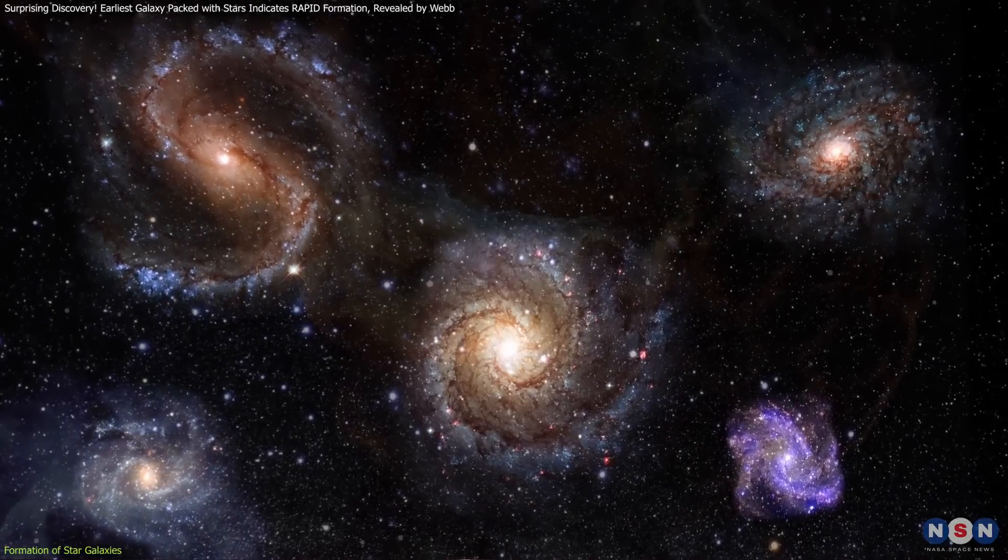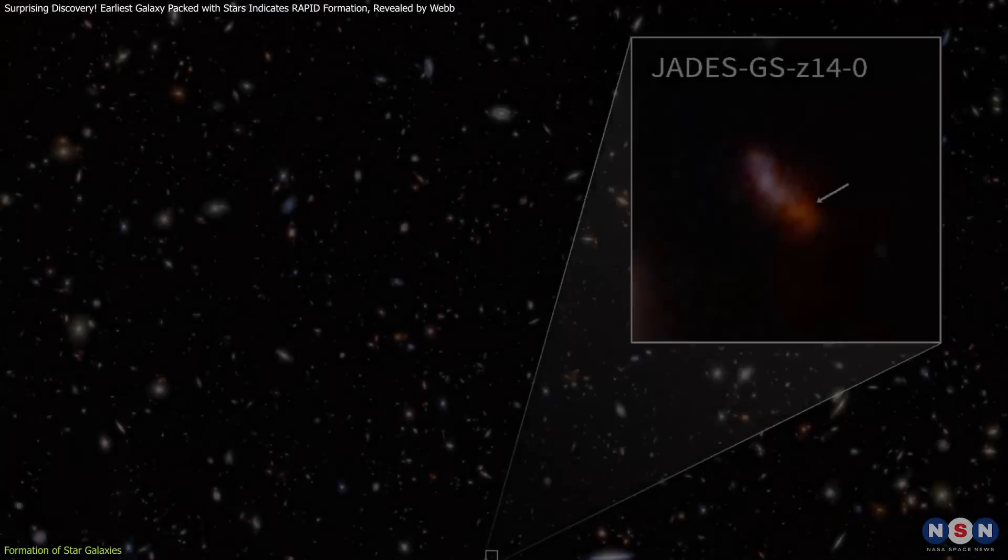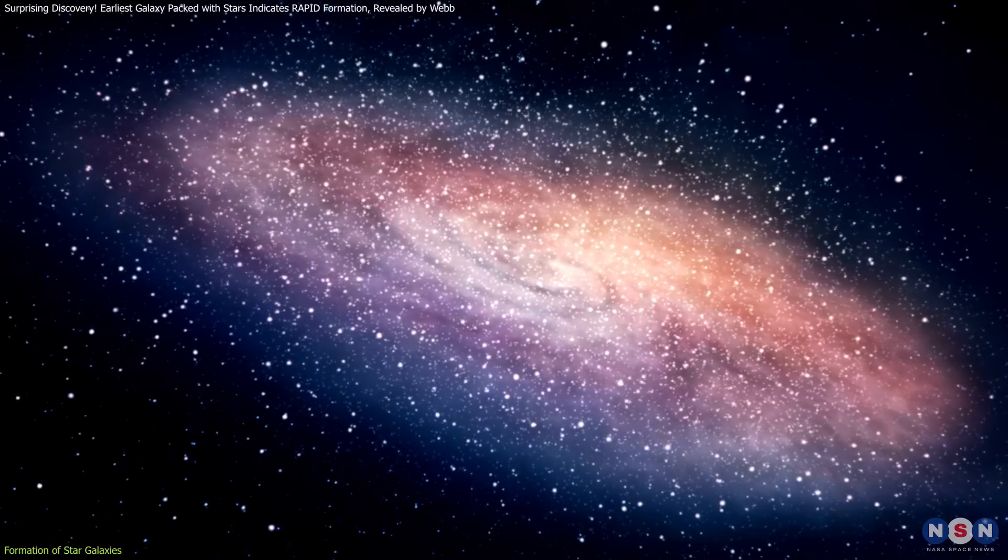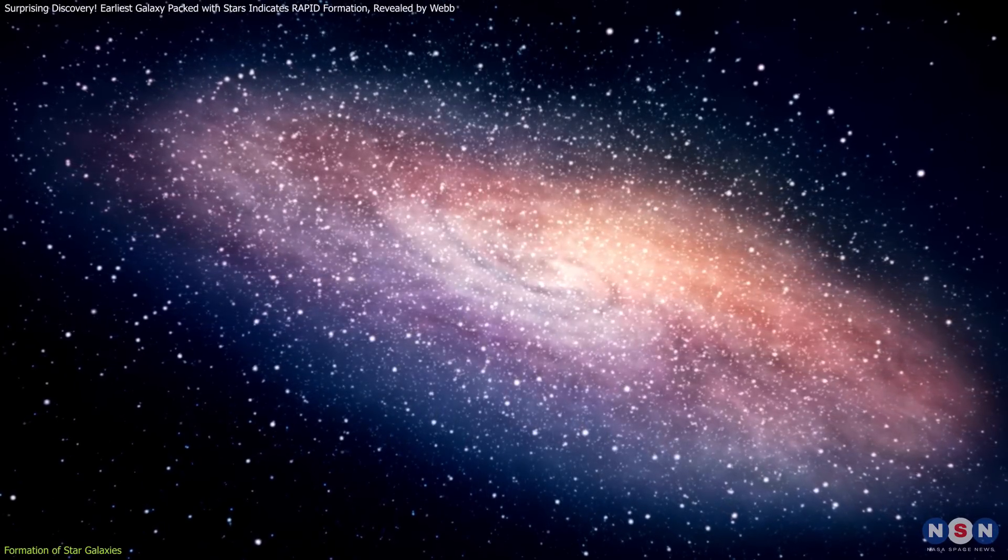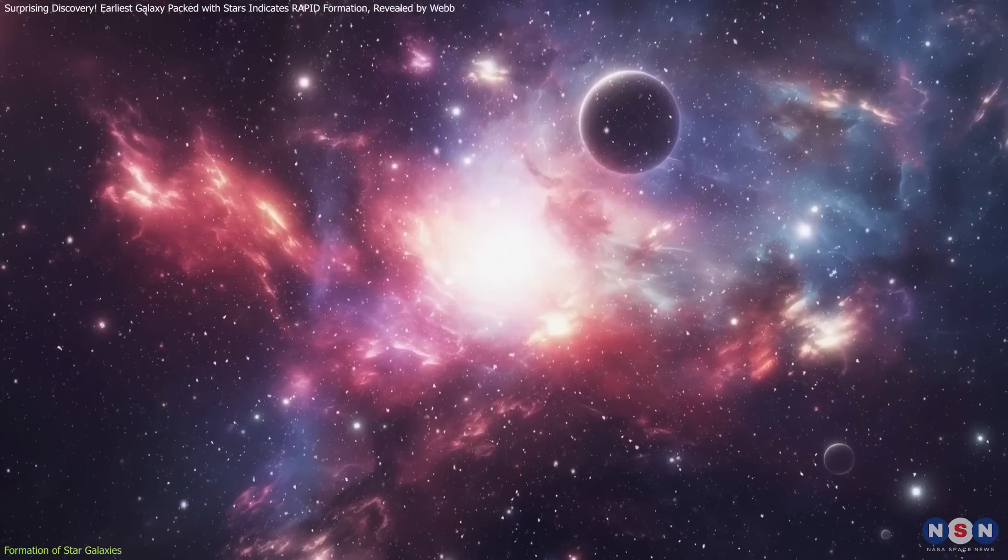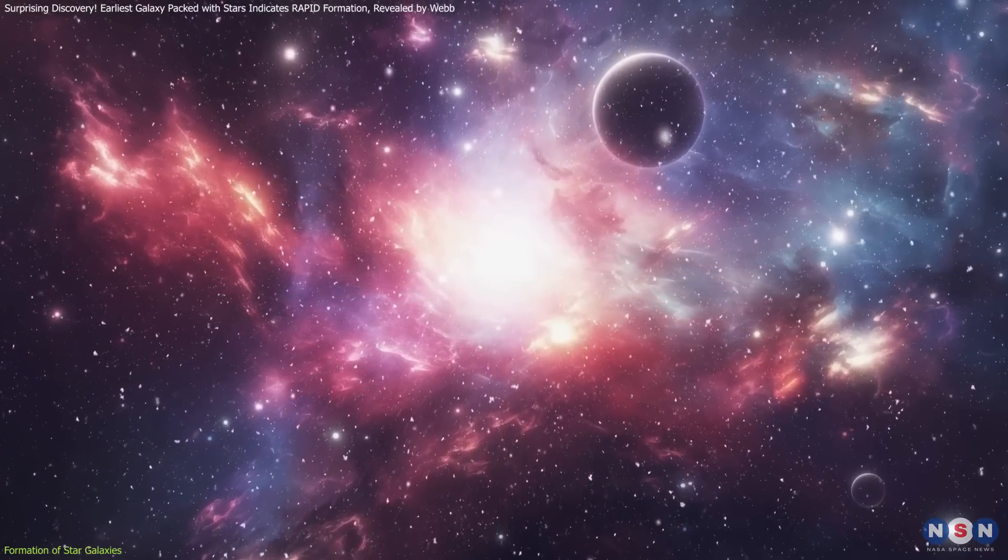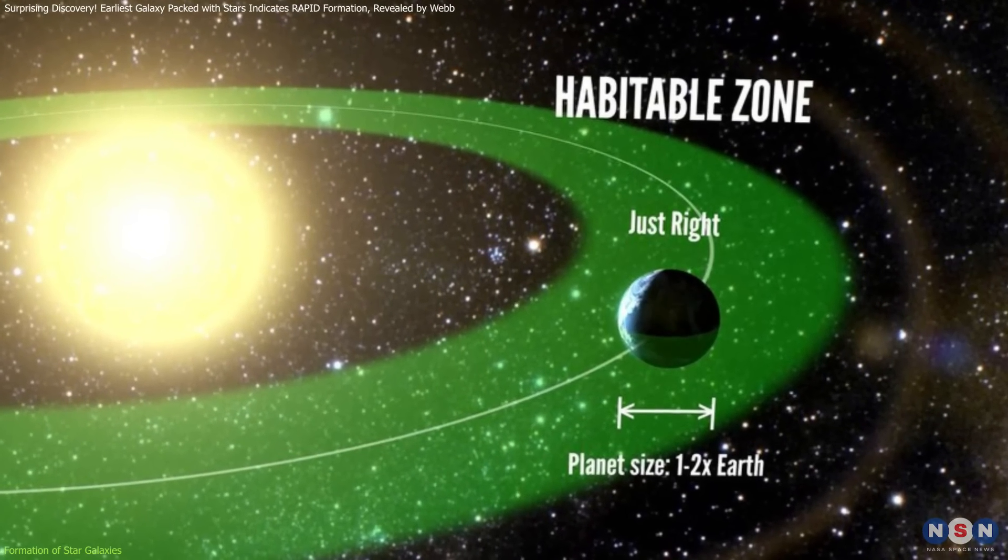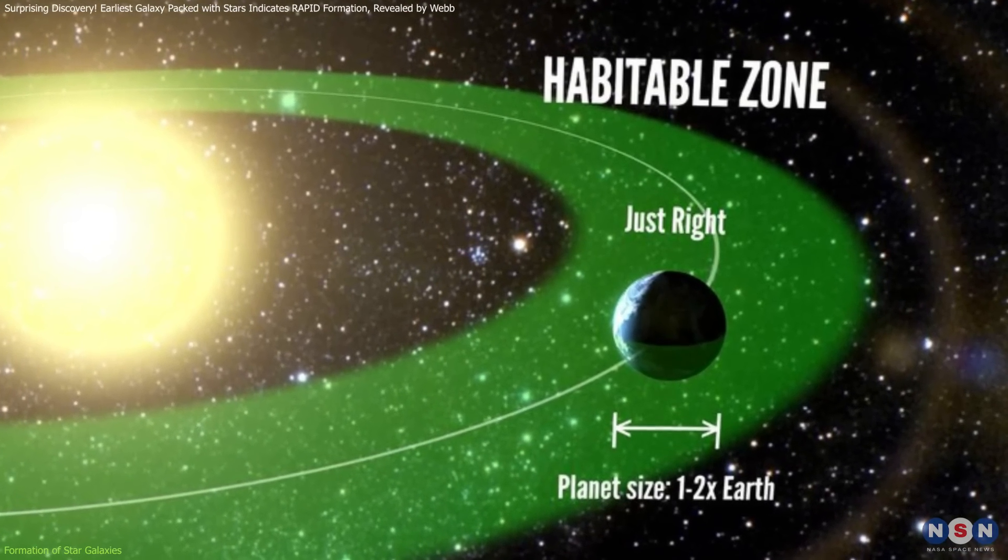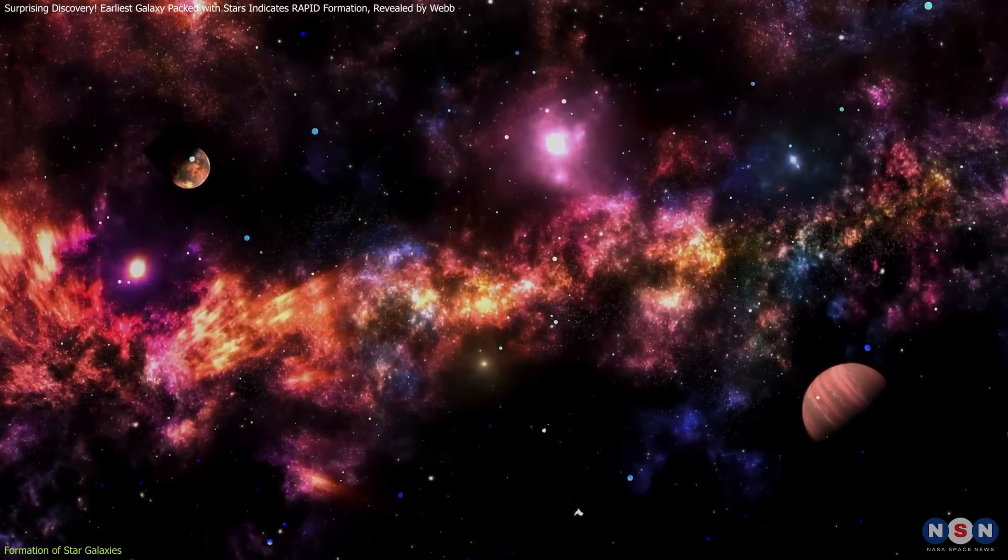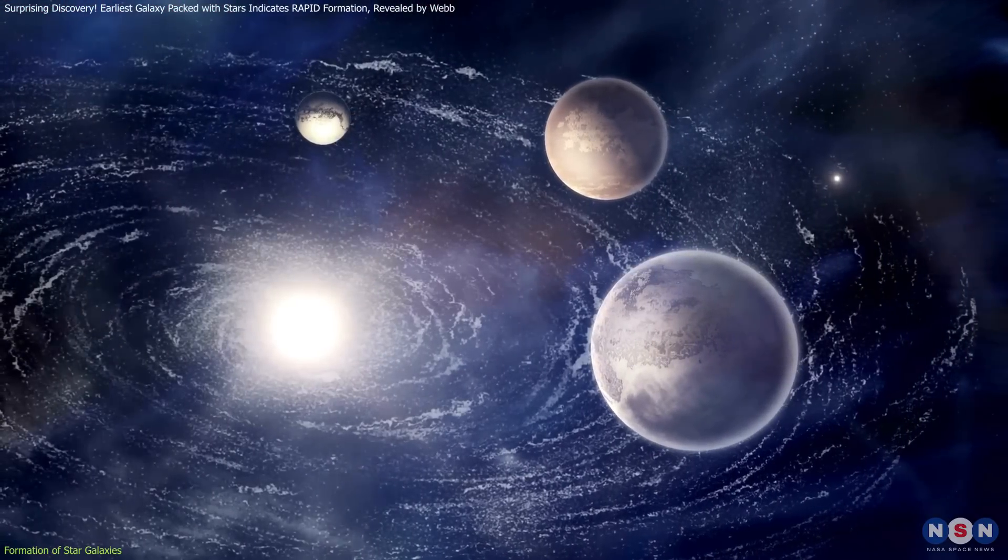These insights not only enhance our understanding of how galaxies like JADES 14-0 could have formed, but also expand the scope of astrobiology. Knowing the chemical composition and history of early galaxies aids in the search for biosignatures, helping scientists target specific regions and types of stars more likely to have life-supporting conditions. Additionally, the concept of habitable zones can be extended to a cosmic scale. This knowledge broadens the potential for discovering life and habitable conditions beyond our solar system.